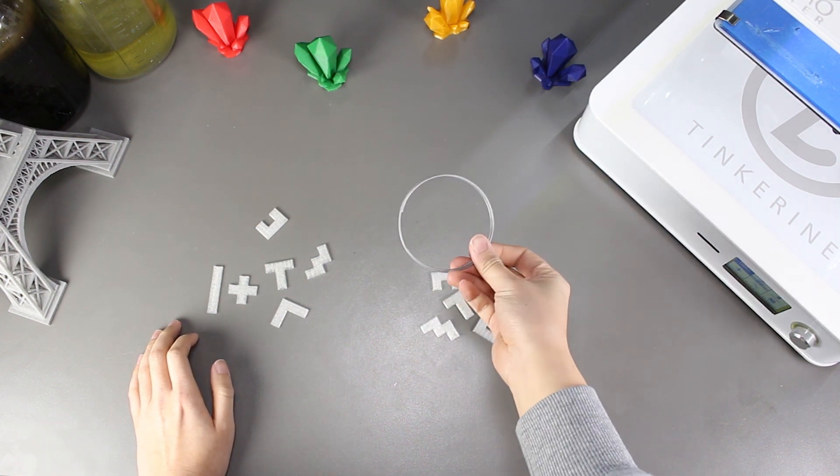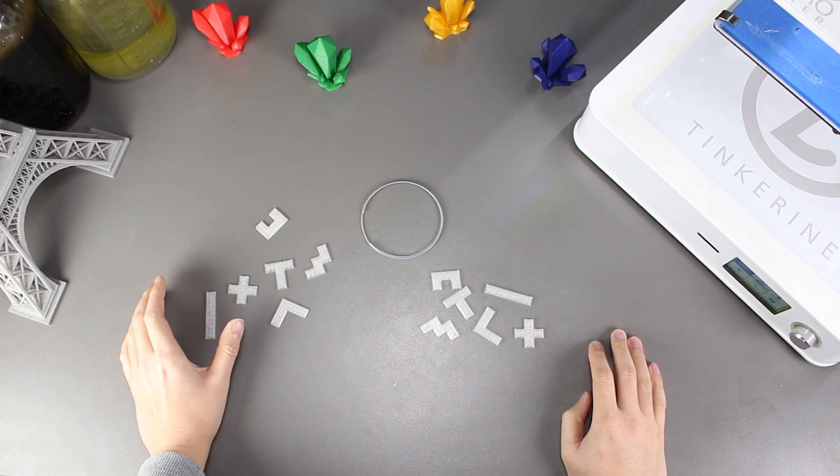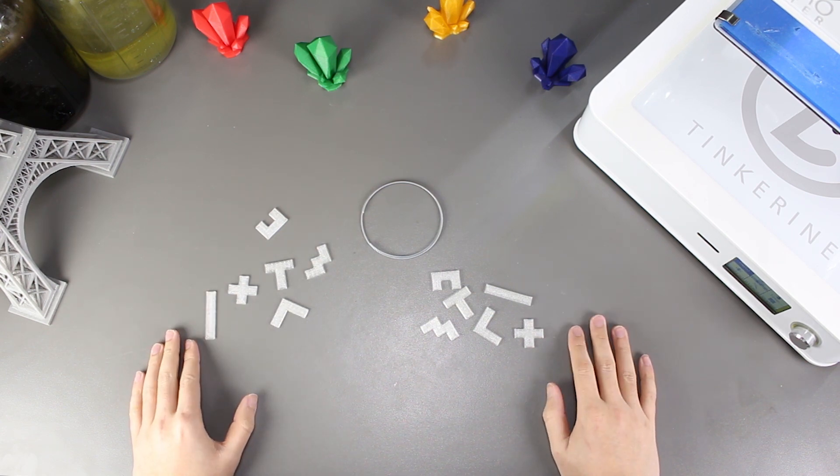Welcome to another episode of Tinkering Experiments. In this episode, we are going to use PLA to weld these parts together and just see how strong it could be.